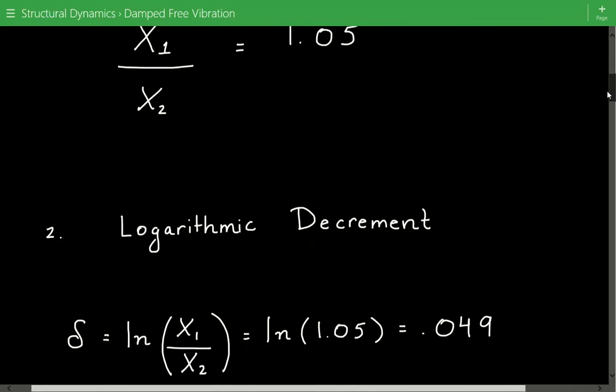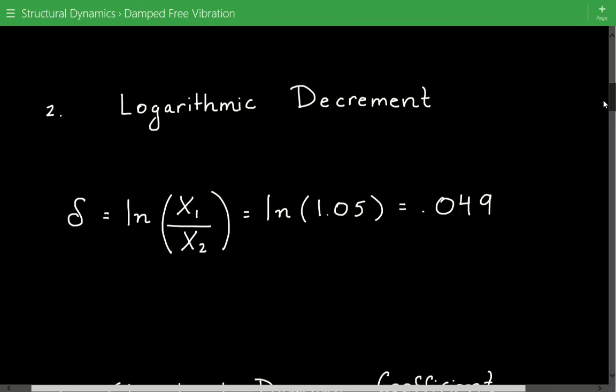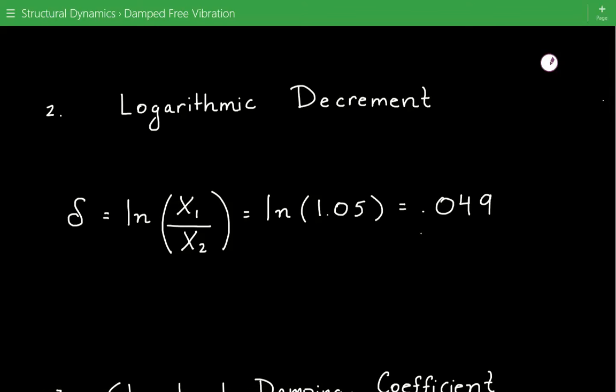Next we need to calculate the logarithmic decrement. That's equal to delta equals the natural log of the ratio of the successive amplitude. So the natural log of 1.05 equals 0.049.